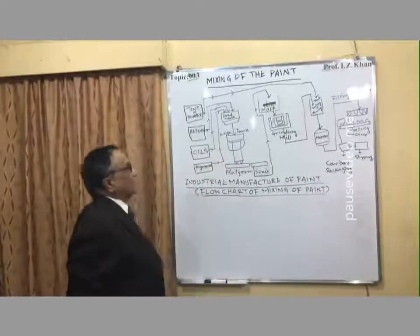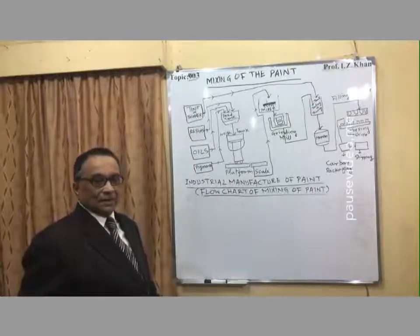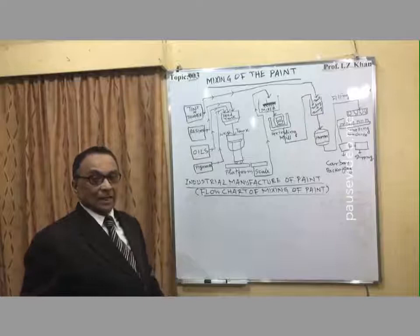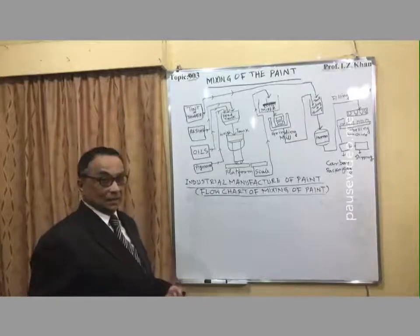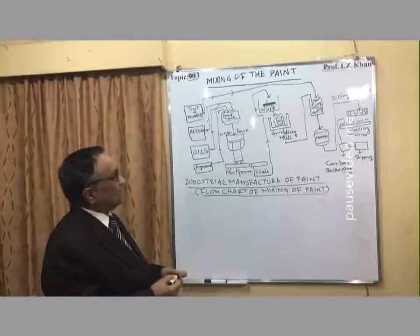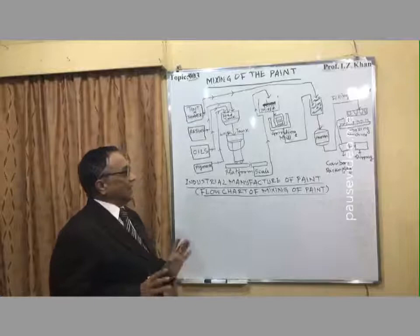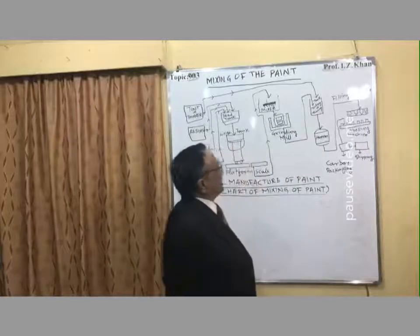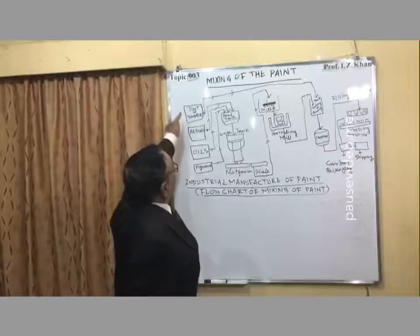It is your grinding mill, and in this grinding mill it will be grinded. There are different types of grinding machines — stone grinding, steel grinding. It depends upon what type of oil and what type of pigment you are using and what type of paint you are manufacturing. On that basis you are going to use the grinding machine. After the grinding, the whole mixture after fine grinding will go to the other tank, known as the tinting and thinning tank.